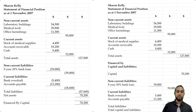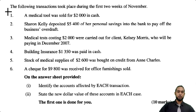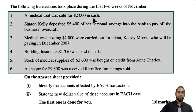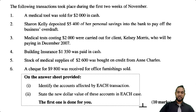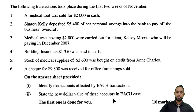We have one more part of this question — part C. It's transaction analysis and some calculations. Part C tells us the following transactions took place in the first two weeks of November. I'm going to show all six transactions. On the answer sheet provided, which I have recreated, identify the accounts affected by each transaction and state the new dollar value of these accounts in each case. The first one is done for you — that's 10 marks.